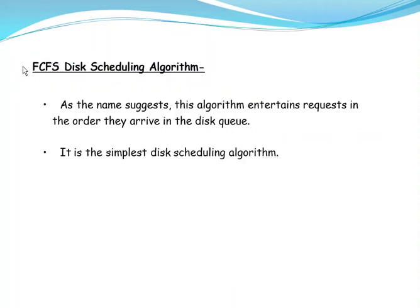FCFS stands for First Come First Serve. As the name suggests, this algorithm processes the requests in the order they arrive in the disk queue. It is the simplest disk scheduling algorithm.